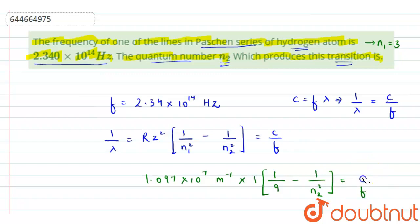Let me put the values of speed of light and the given frequency. So we have 3 × 10^8 meters per second, and the frequency given is 2.34 × 10^14 Hertz.